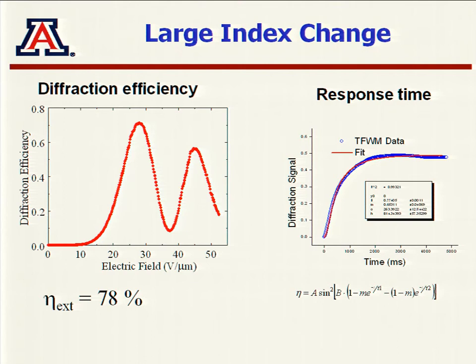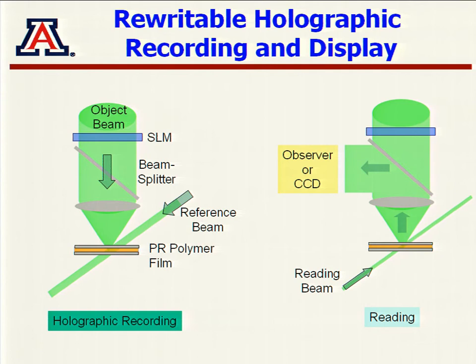If you increase the field even more, the index change becomes larger so that light transfers to the other beam — you get several modulations, index changes on the order of 0.01, which is pretty large for these systems. If you look at the dynamics, a few milliseconds is the time needed to do this, so it's quite rapid.